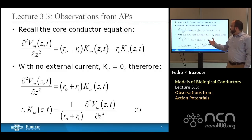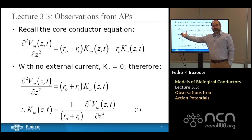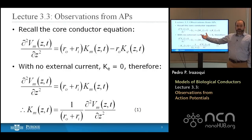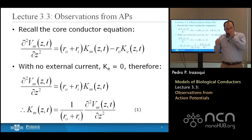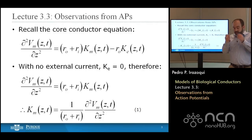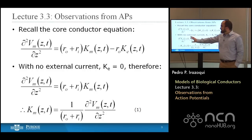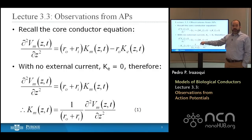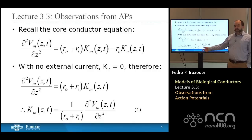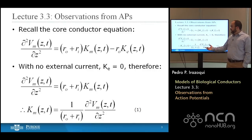We have a relationship between the second derivative of the membrane voltage and the membrane current, but this is one equation with two unknowns. In order to solve this, we need to add a second equation with the same two unknowns — and that's what we're working towards. With no external current, setting Ke equal to zero, this equation becomes: the second derivative of the membrane voltage equals the sum of external and internal impedances multiplied by the membrane current Km, which rearranges to Km equals one over the sum of impedances times the second derivative of the membrane voltage.